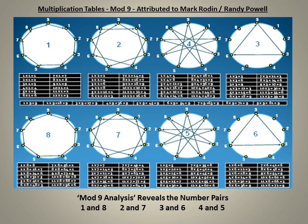The 8 times table goes 8, 16 is 7, 24 is 6, 32 is 5, 40 is 4, etc. Notice that the 8 shares the same geometry as the 1, except it flows anticlockwise. Similarly for the 7, 5, and 6, which produce the same geometry as the 2, 4, and 3 respectively.